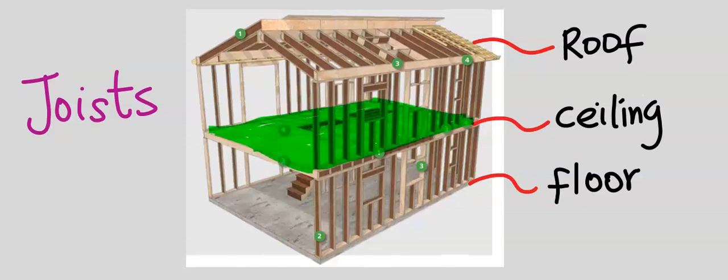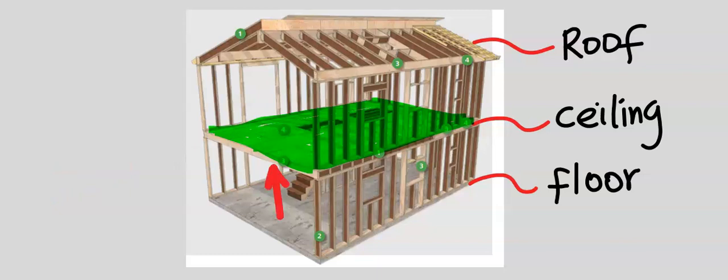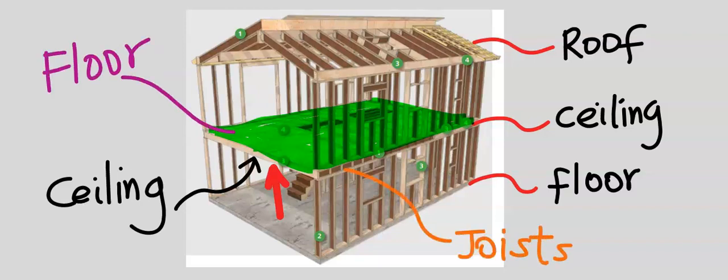The shaded portion of the structure is a floor. However, under the floor is a ceiling. Joists will exist between the floor and the ceiling. Joists enable the ceiling to be fixed and the joist will equally support the floor.